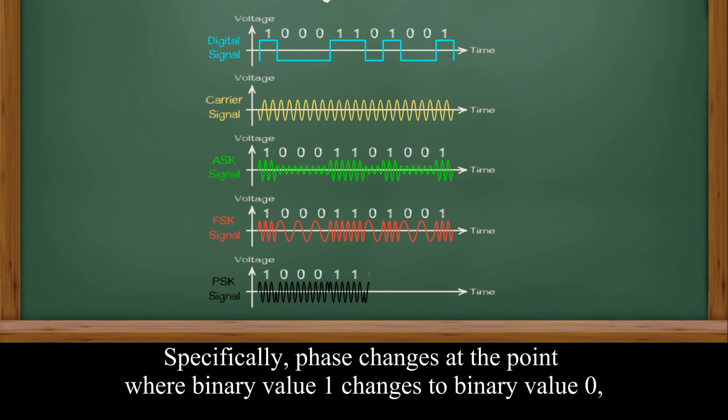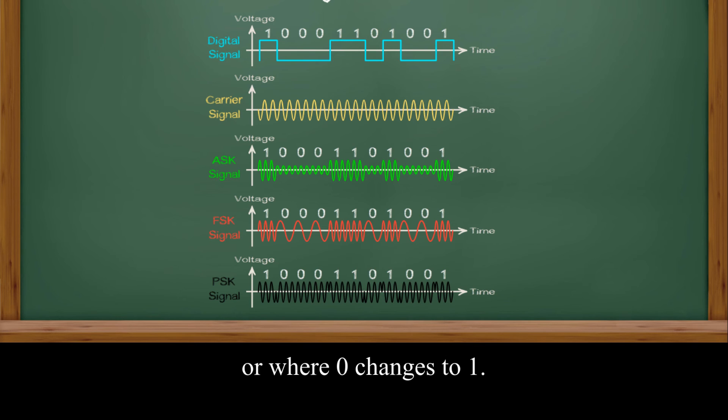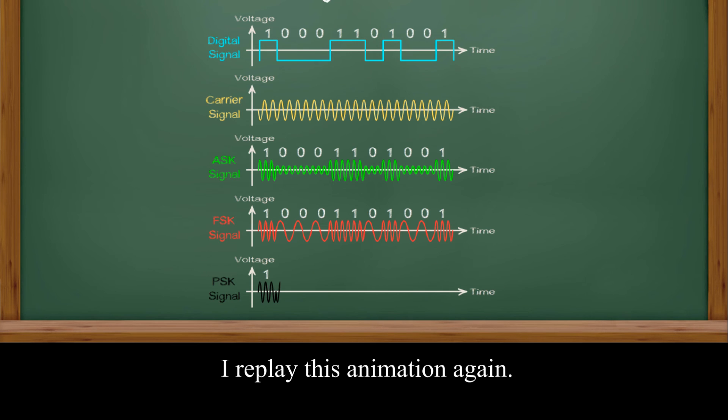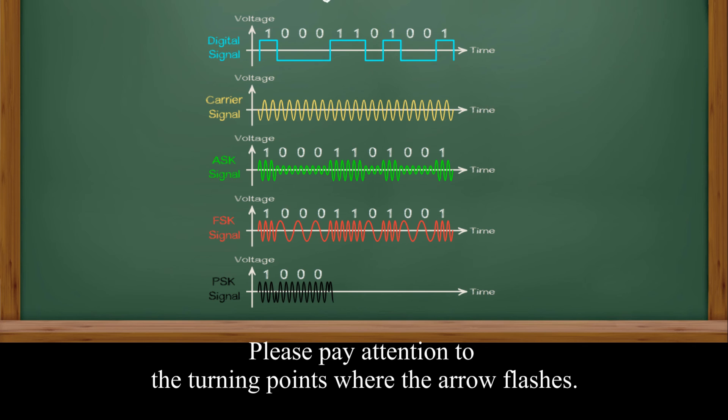Specifically, phase changes at the point where the binary value 1 changes to binary value 0, or where the 0 changes to 1. I will replay this animation again. Please pay attention to the turning points where the arrow flashes.